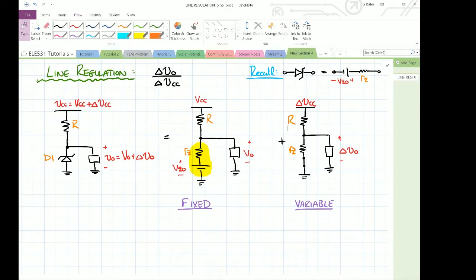The line regulation basically quantifies how the regulator operates when there is some disturbance in the line or supply. In electrical engineering, the word line is typically referring to supply voltage, so when I say line voltage or I say line, I'm really referring to the supply or VCC as drawn in this circuit. Typically in an introductory electronics course, the main regulator will be either some sort of diode regulator or a Zener diode regulator.